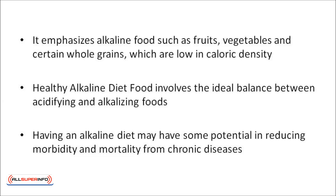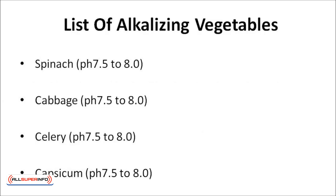Here is a list of some alkalizing vegetables. Spinach is very low alkaline-forming, with a moderate alkaline pH of 7.5 to 8.0. Cabbage is a low alkaline-forming food with a moderate alkaline level of 0.75 to 0.80, and it is mineral rich. Celery is a very low alkaline-forming food with a moderate alkaline pH of 7.5 to 8.0, and it elevates acid food toward the alkaline direction. Capsicum, or bell peppers, is a low alkaline-forming food with a moderate alkaline pH level of 7.5 to 8.0, and it is mineral rich.